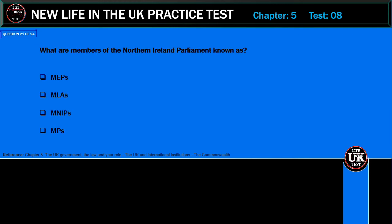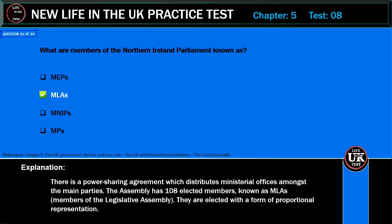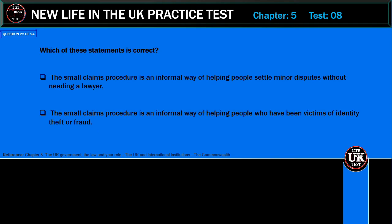What are members of the Northern Ireland Parliament known as? MEPs, MLAs, MNIPs, or MPs? Correct answer: MLAs. Explanation: There is a power-sharing agreement which distributes ministerial offices amongst the main parties. The Assembly has 108 elected members known as MLAs — Members of the Legislative Assembly. They are elected with a form of proportional representation.